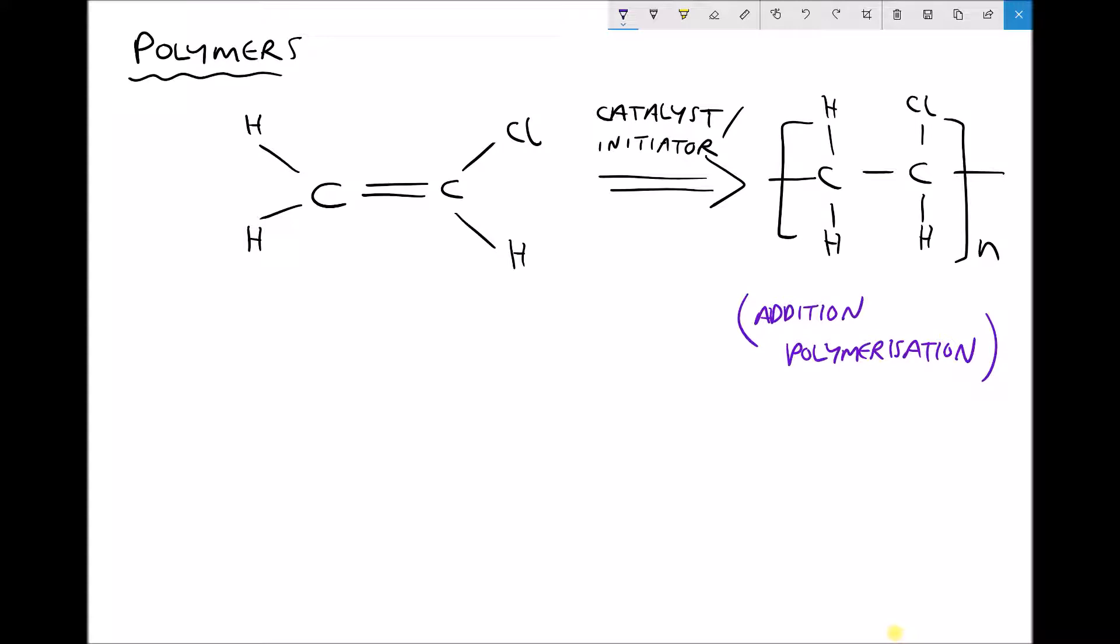On the left hand side we see a molecule called chloroethene. Chloro for chlorine, ethene for the ethene monomer. In order to form the polymer, we need to find a way of breaking one of the double bonds between the two carbons.